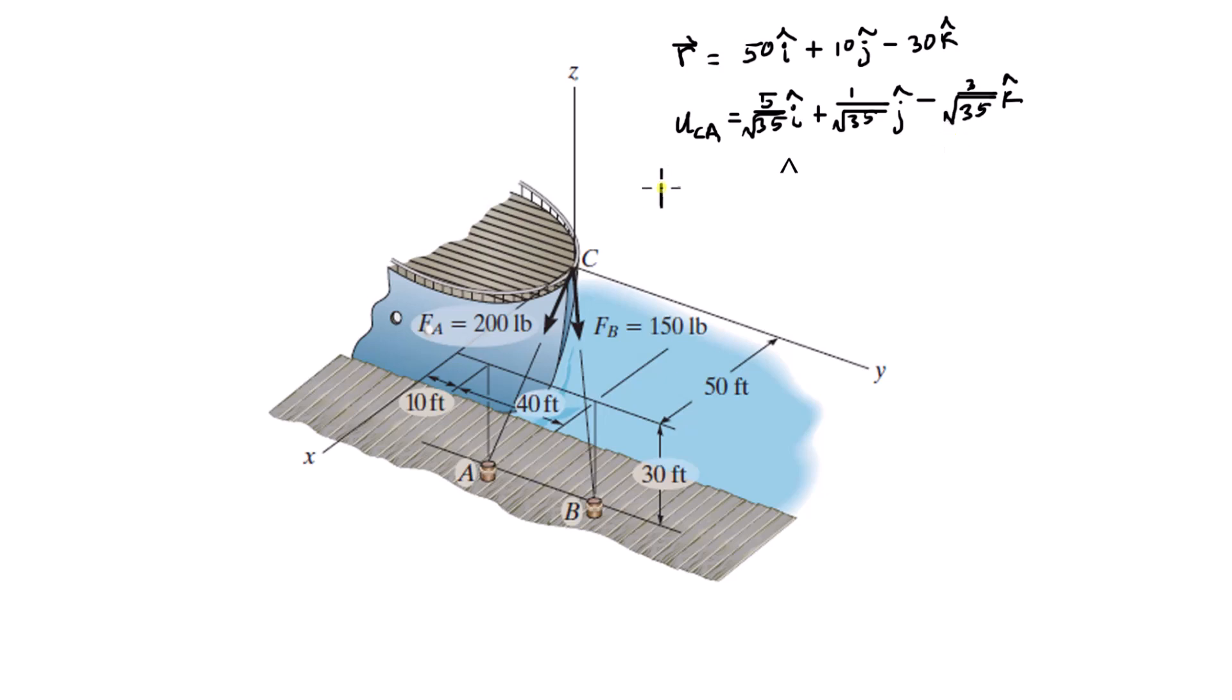So now this vector FA, the force vector FA, is just 200 times UCA. And so you'd multiply each of these components by 200.